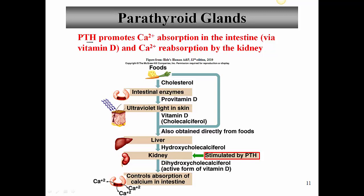Parathyroid hormone's action at the intestine to increase calcium absorption works through vitamin D. Parathyroid hormone stimulates the kidney to produce the active form of vitamin D, which is dihydroxycholecalciferol - also called calcitriol. This is what actually increases calcium absorption from the intestine.